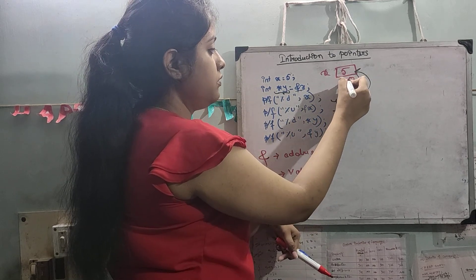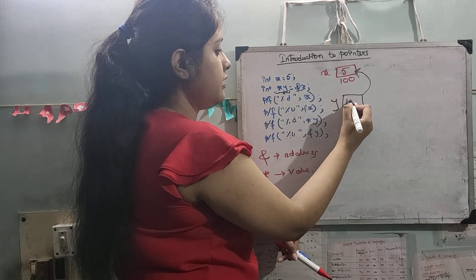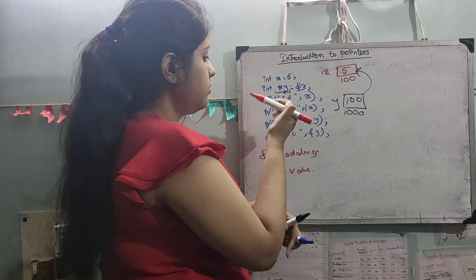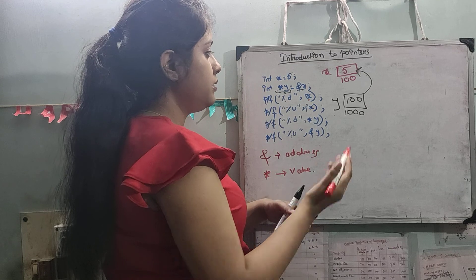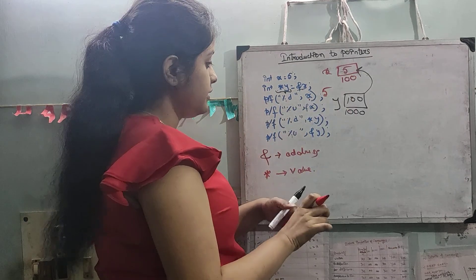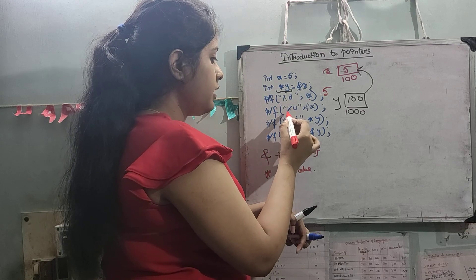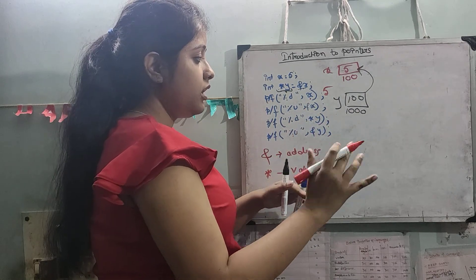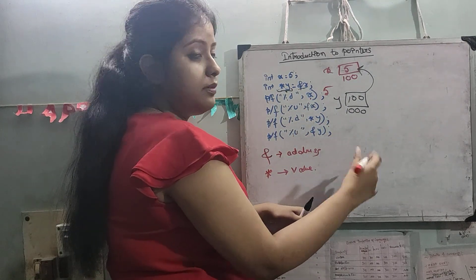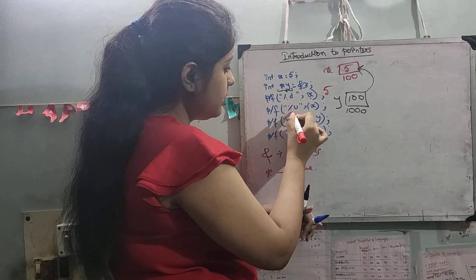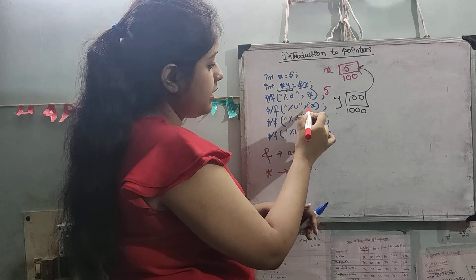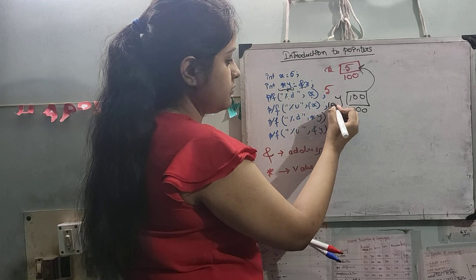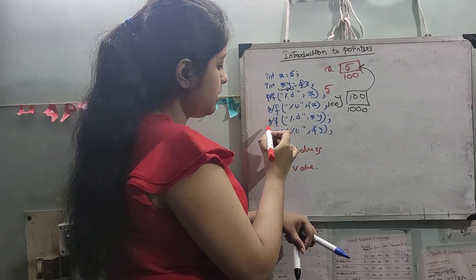The value of address of x is 100, and suppose its own address is 1000. Now, printf with %d and x: what will be printed? 5 is printed — that's easy. Next, printf with %u and address of x. I have given you some notes about format specifiers, please go check that video. So %u prints the address of x, which is 100.